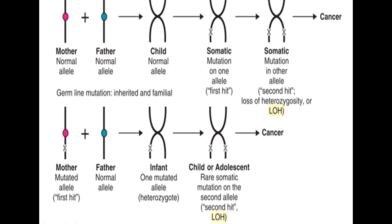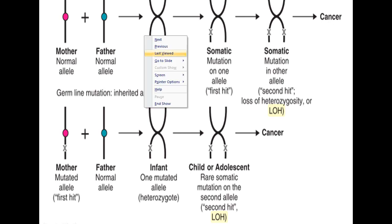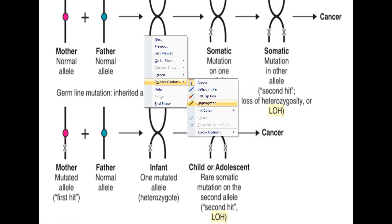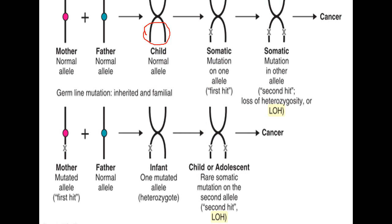Any chromosome consists of genes, and these genes have two alleles — one from the mother and the other from the father. If both the alleles are found to be normal, the child has no abnormality. Later on, one mutation develops in only one allele. The former condition where both alleles are the same is called a homozygous condition, but when one allele is mutated, this is called a heterozygous condition.